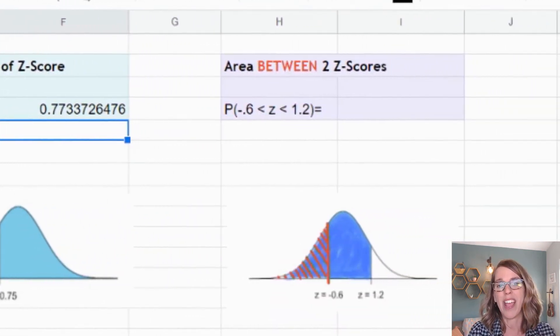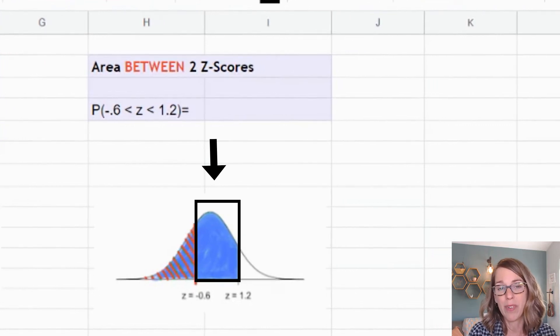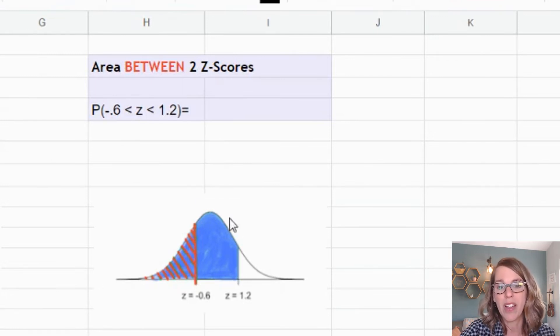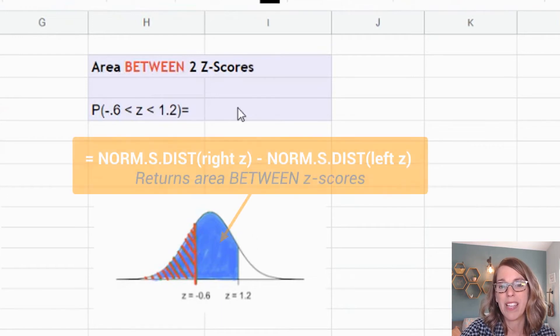The next example is for an area in between. Remember that our function, NORM.S.DIST, only calculates an area to the left. So I've got to work with it. What I really want is the area in blue, which is everything over to the left tail, and I want to subtract the area in red. That's going to give me the area in between.